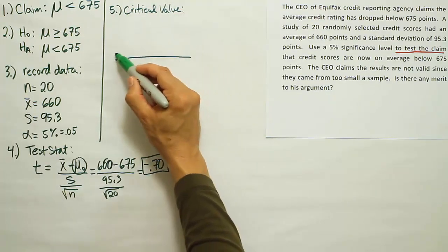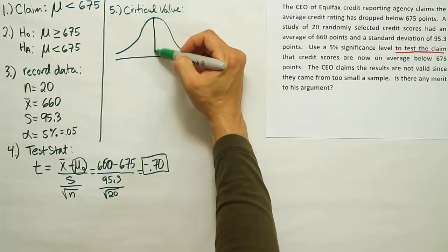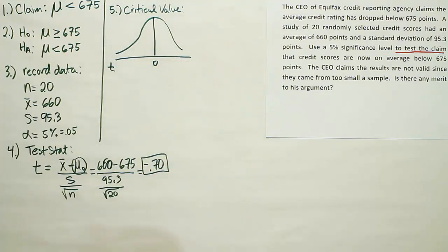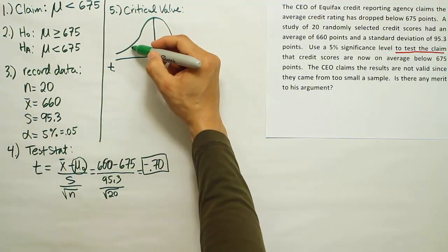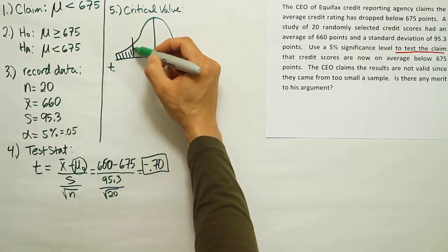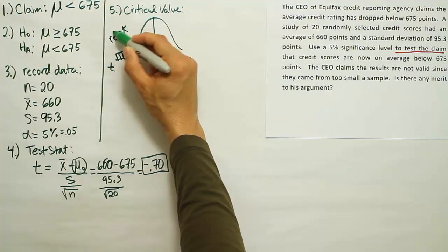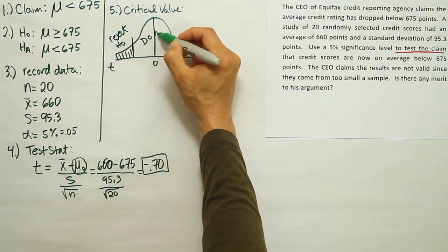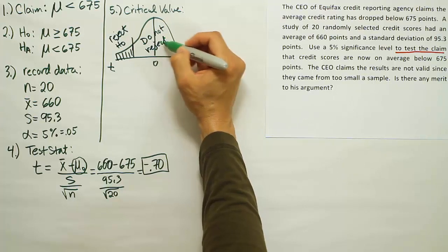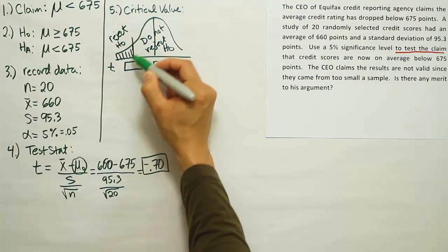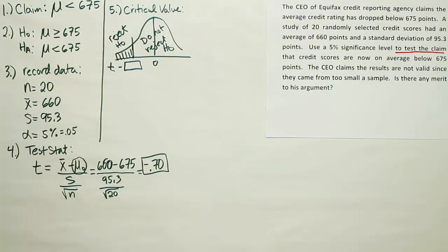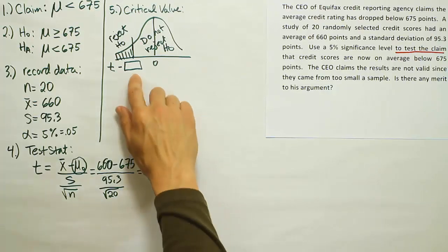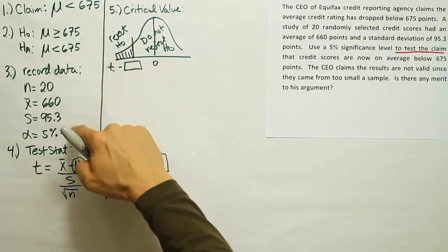In order to do the critical value, I'd like you to draw the bell curve. This time it's a t-test, so we'll put a t number line at the bottom. And what we want to do is indicate whether it's a left-tail test, right-tail test, or two-tail test. We look at HA to determine that. It's a less-than symbol. Remember, less-than means we're dealing with a left-tail test. And this is our rejection region.